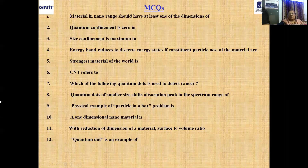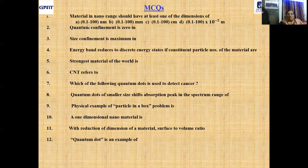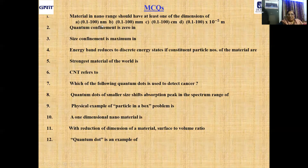Now let us move to multiple choice questions, as done at the end of each chapter. Question 1: Materials in nanorange should have at least one dimension of — options: (A) 0.1 to 100 nanometer, (B) 0.1 to 100 millimeter, (C) 0.1 to 100 centimeter, (D) 0.1 to 100 × 10⁻⁵ meter. Answer: Option A, 0.1 to 100 nanometer.